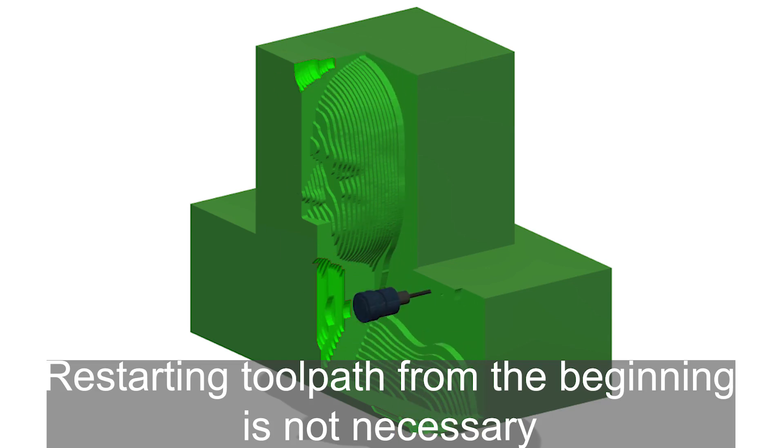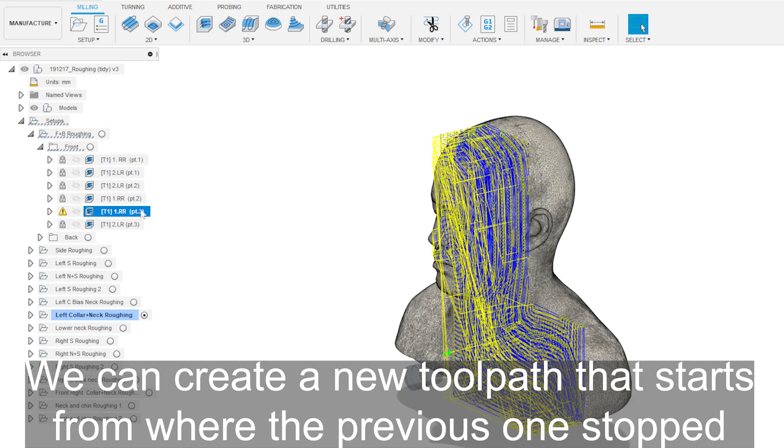In events where machining has not been completed, for example a power cut, restarting the tool path from the beginning is not necessary. We can create a new tool path that starts from where the previous one had stopped.